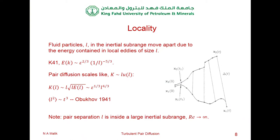Although it is an unproven hypothesis, it has become so much part of the background that it's now referred to as the Richardson-Obukov law — in fact, it's just a hypothesis. The other thing I wish to emphasize is that this theory is valid for asymptotically almost infinite Reynolds number — that is, for a very large inertial subrange. How large the inertial subrange needs to be is still an open question.